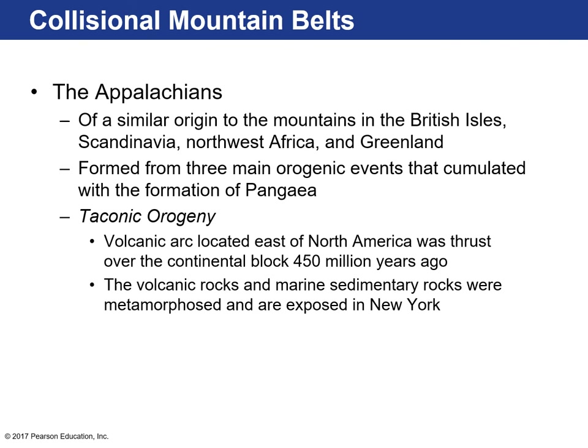Let's talk about the Appalachians — a much older mountain chain. They are of similar origin to the mountains of the British Isles, Scandinavia, or the Caledonian Mountains, Northwest Africa, and Greenland — all related to one another. This mountain chain formed under three main steps, or orogenic events, which culminated at the formation of Pangaea around 200–180 million years ago. The first was the Taconic Orogeny — a volcanic arc located just east of North America was thrust over the continental block about 450 million years ago.